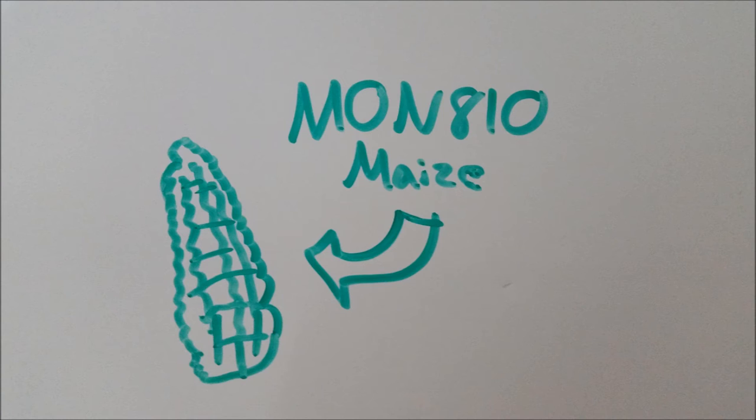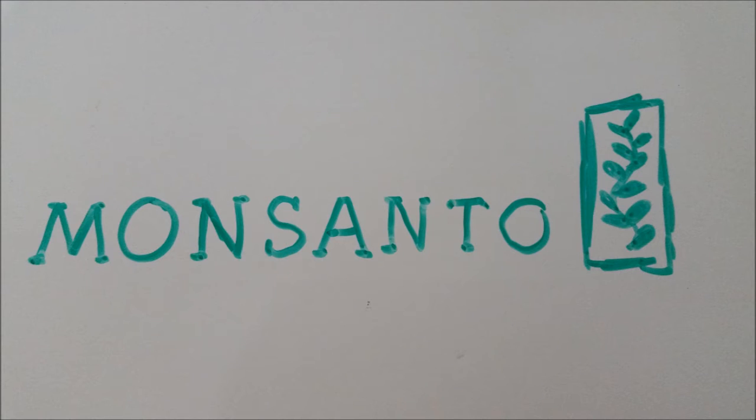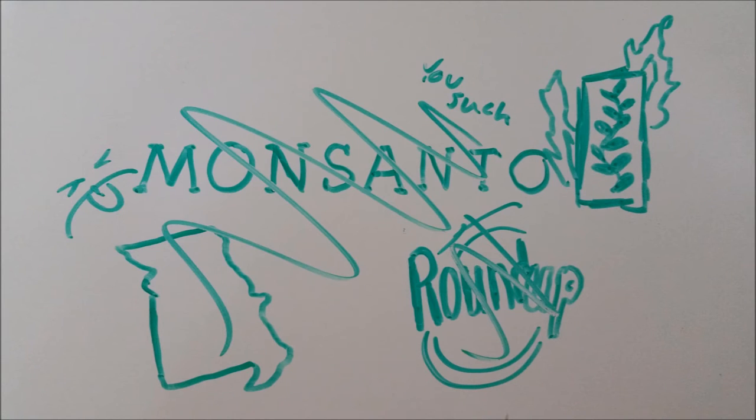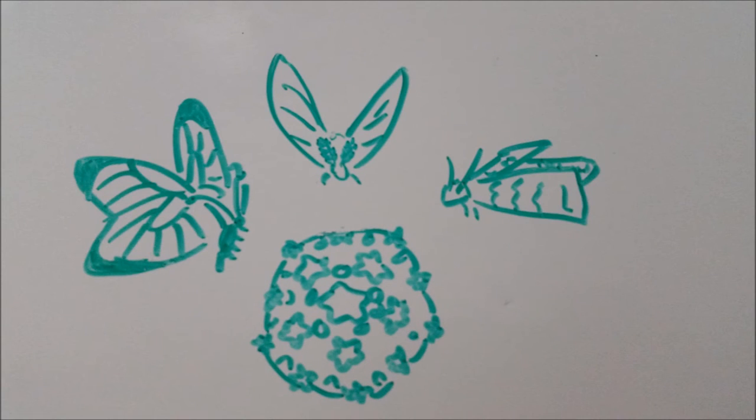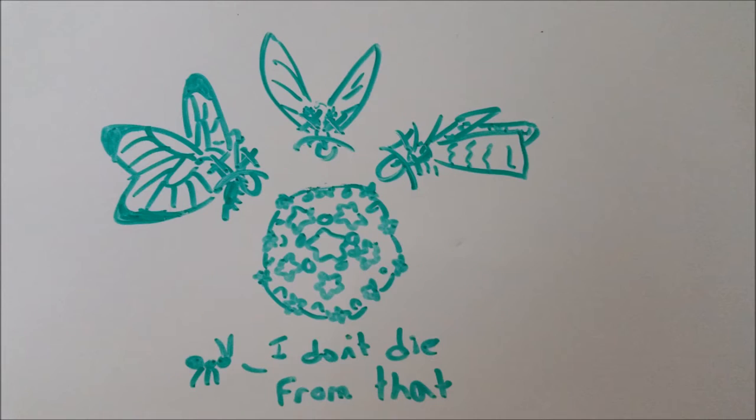First is the MON-810 maize created by Monsanto, that company from Missouri that created Roundup and Everybody Hates. MON-810 is a breed of corn that has the gene of the Cauliflower Mosaic Virus, which when consumed by butterflies, moths, and the European corn borer will kill them, but no other type of insect.